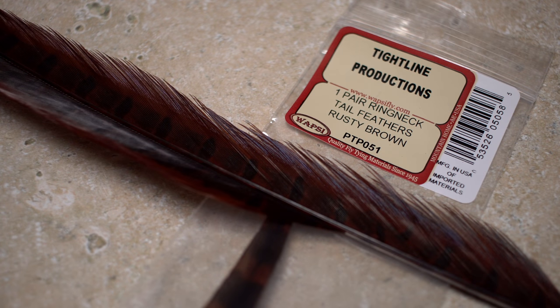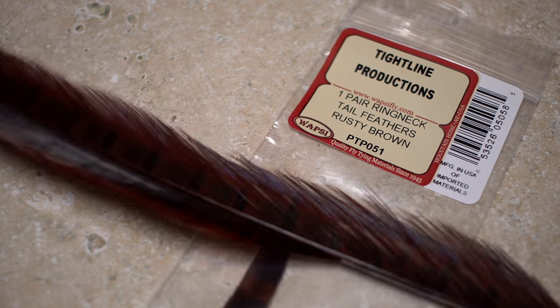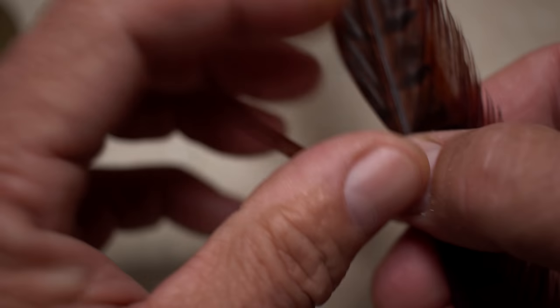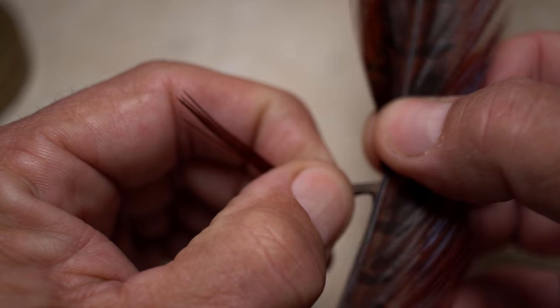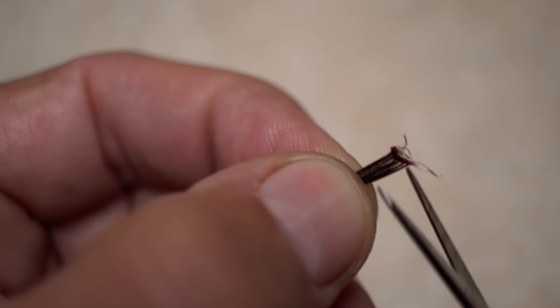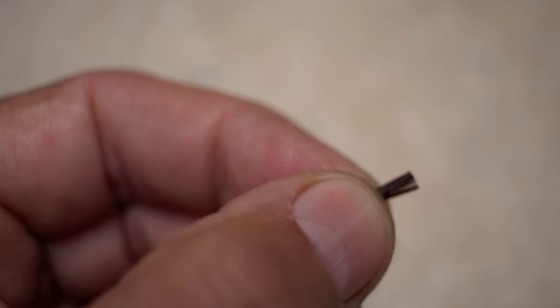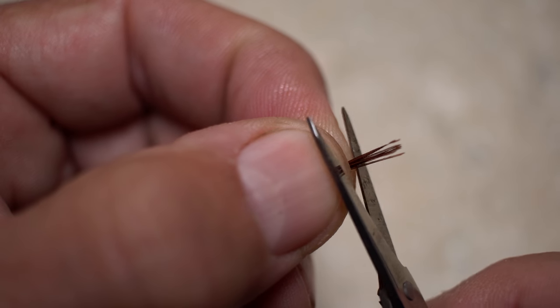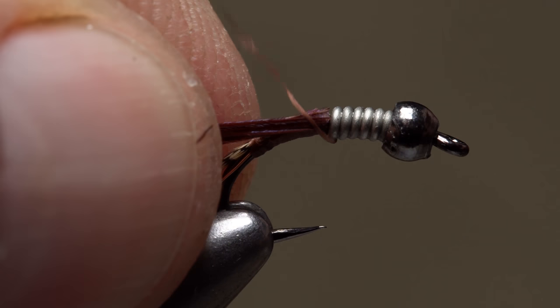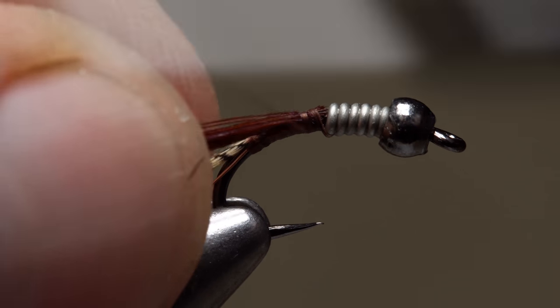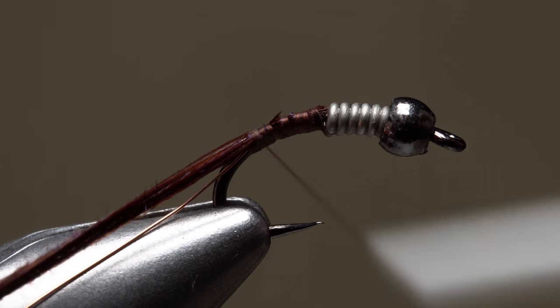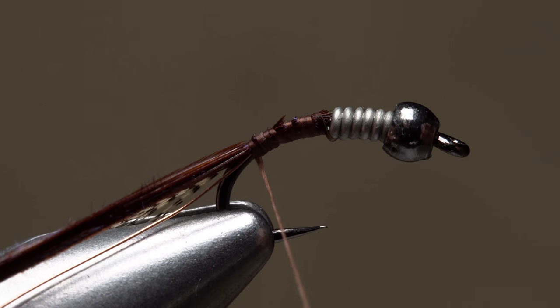The abdomen and wing case of the fly are made of rusty brown pheasant tail fibers. Locate the side of the feather with the longer, stiffer fibers and strip 6 to 8 free from the stem. It's a good idea to snip the curlies off so they don't get caught on things. Also snip the brittle tips off square. Butt the tip end of the fibers against the weight and make tight turns of tying thread to bind them to the top of the hook shank. Wrap all the way down to the base of the tail.